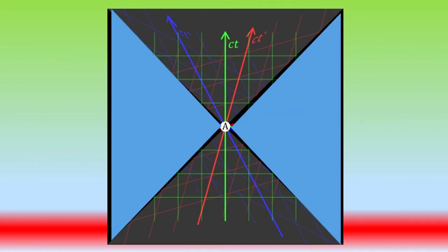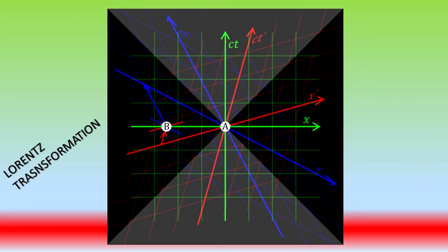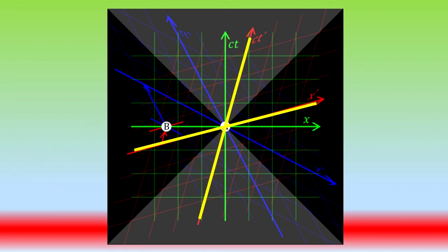The events outside of these cones can neither influence nor be influenced by A, without faster than light travel or communication. When the perspective of the graph changes, the entire coordinate plane is shifted. This is called a Lorentz transformation, which is represented by the differently colored axes.